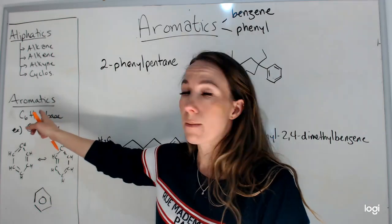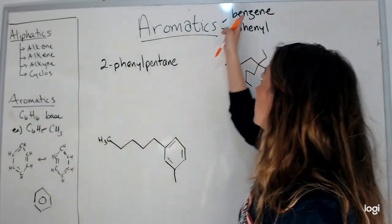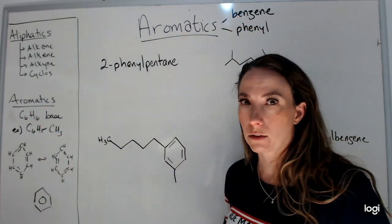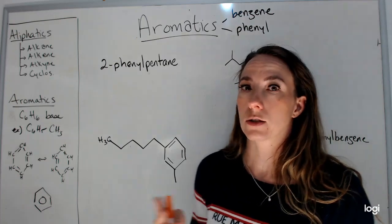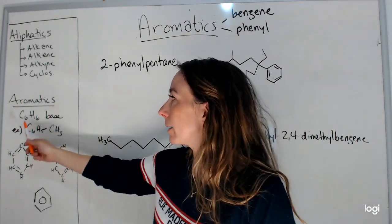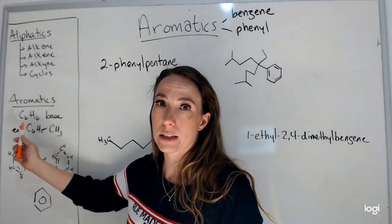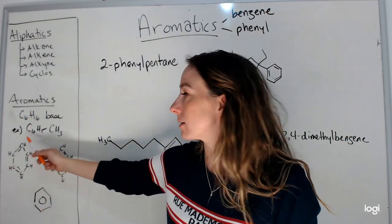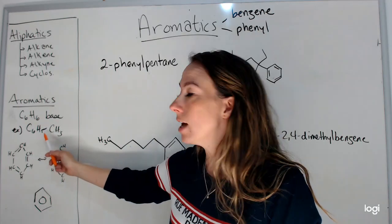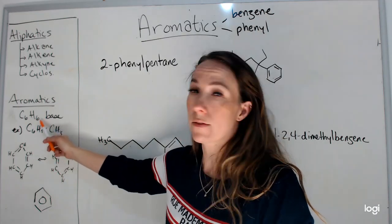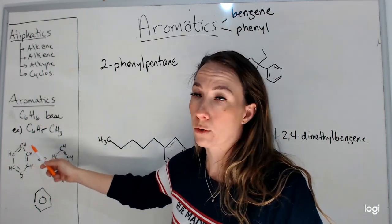And the aromatics contain a benzene ring or a phenyl group. It's the same thing, but we name them differently sometimes. So an aromatic base, you can recognize an aromatic in its molecular formula because it'll have a C6H6 base. So sometimes it'll look like this, C6H5CH3, because I had to take off one of the hydrogens in order to tuck on that methyl group.